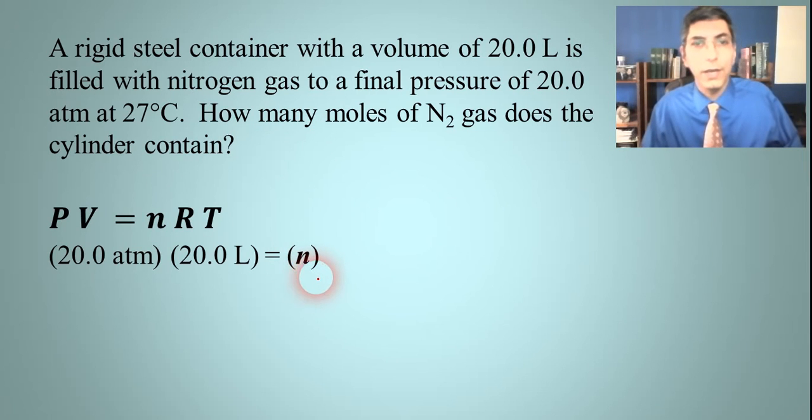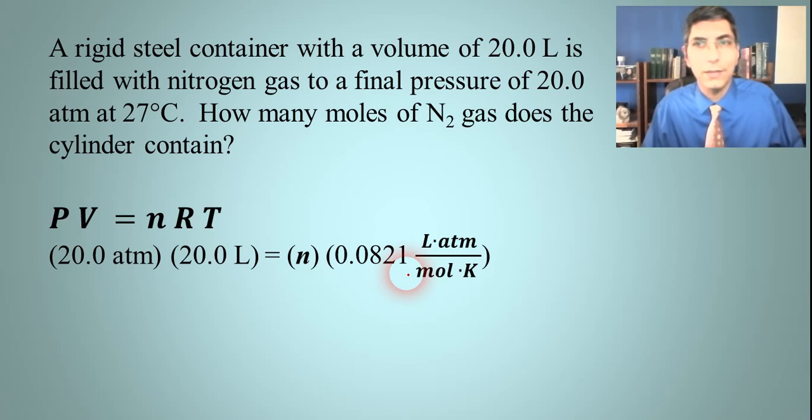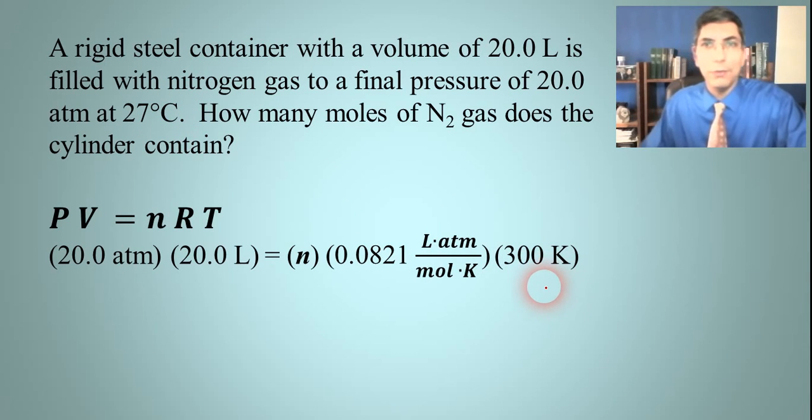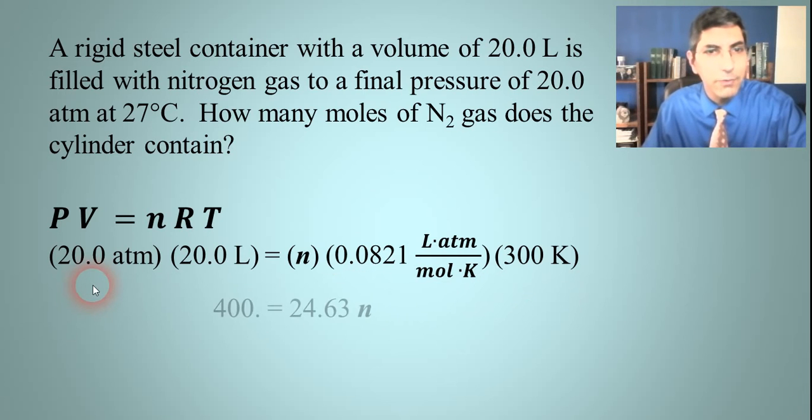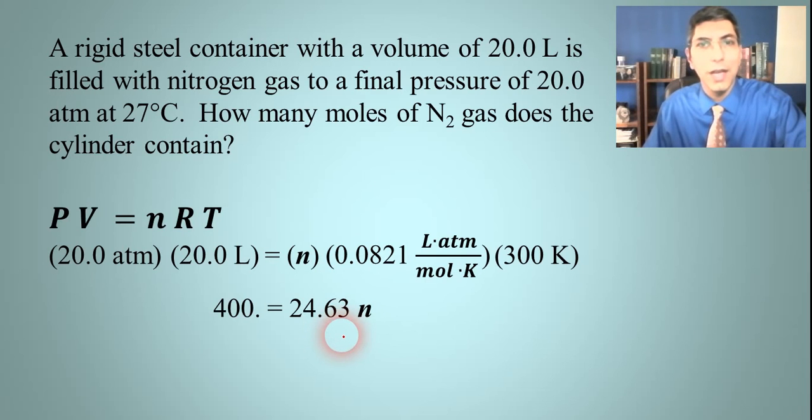R is my constant, so that's 0.0821, and that should never change. T is temperature in kelvins, don't forget, so 27 degrees Celsius equals 300 kelvins. Now I'm able to do some algebra. We have 400 equals n times 24.63. I divide both sides by 24.63 and find that n, my number of moles, will be 16.2 moles.